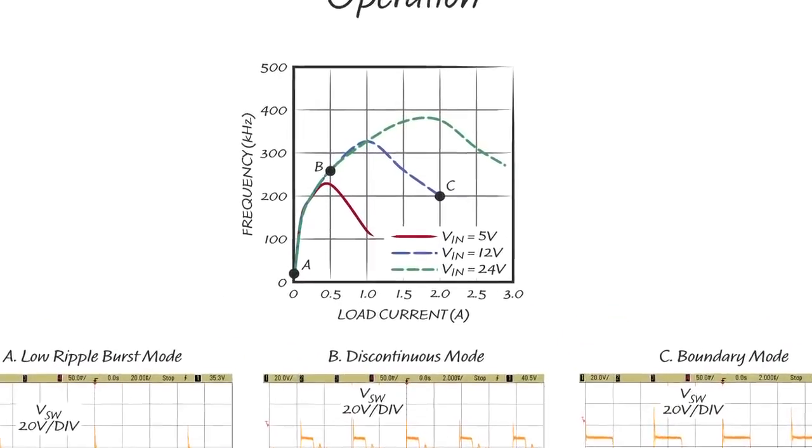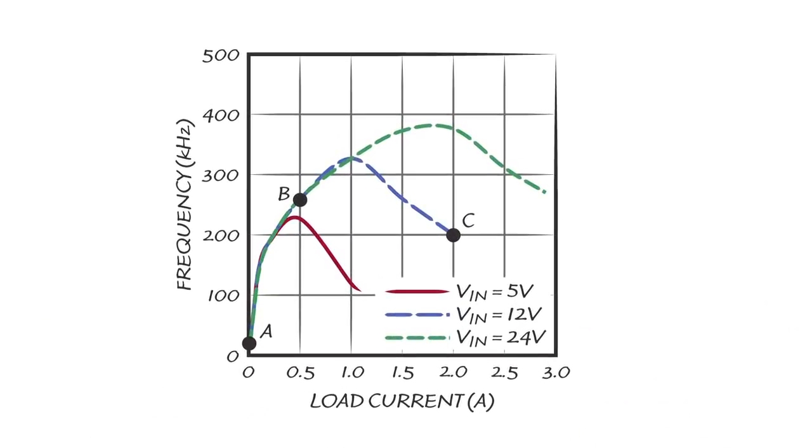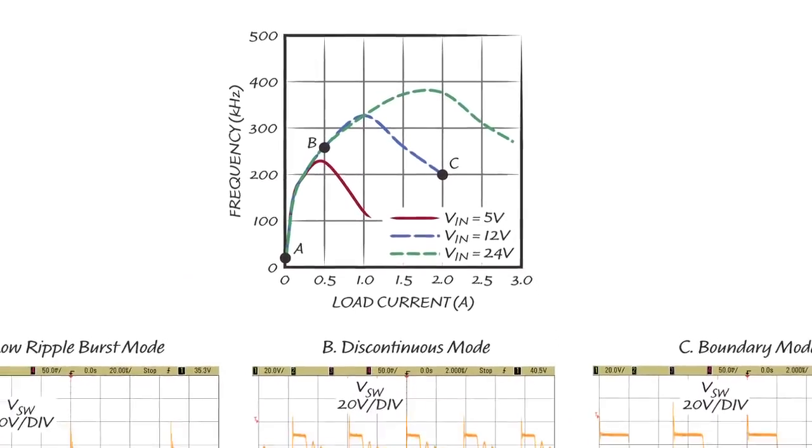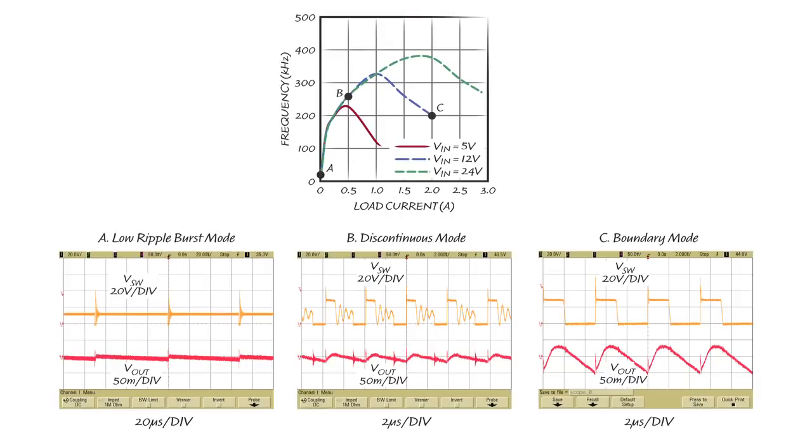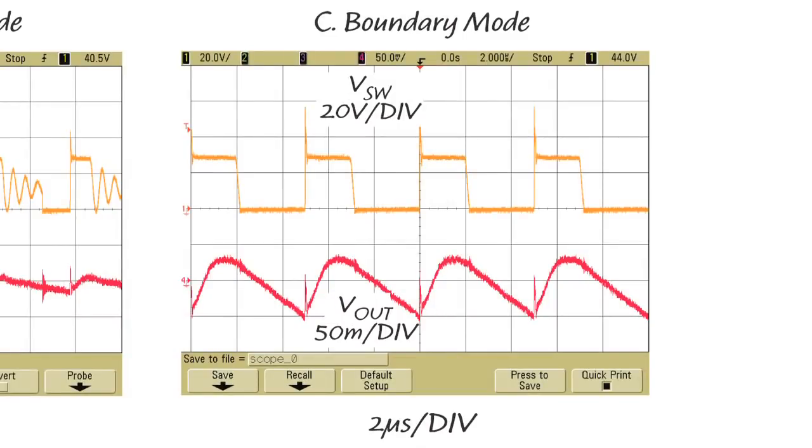The top graph shows the switching frequency versus load current at three different input levels. The bottom scope shots show the waveforms at three operating points. At point C, with 2A load current, the LT8302 works in quasi-resonant boundary mode, in which the primary switch turns back on when the secondary current goes to zero and the switch voltage rings to its valley.